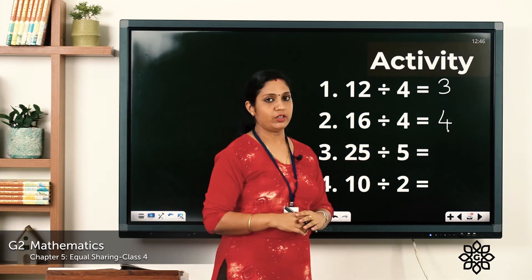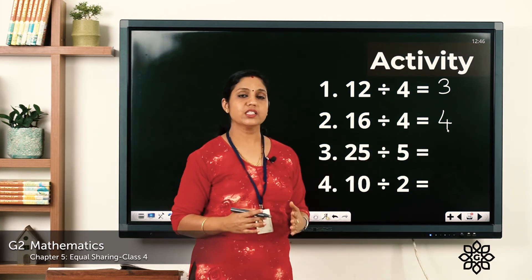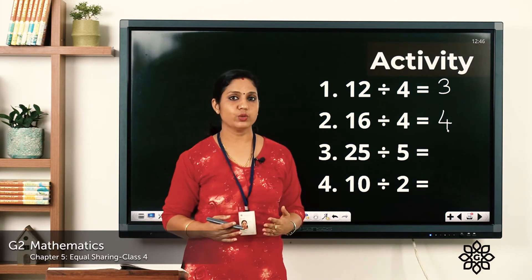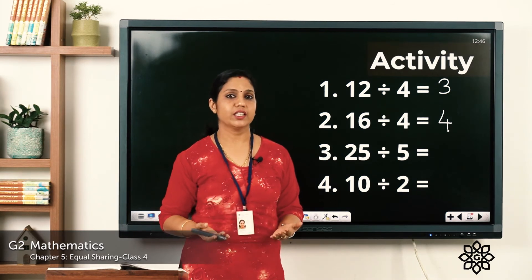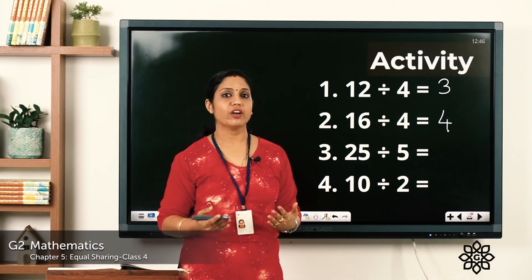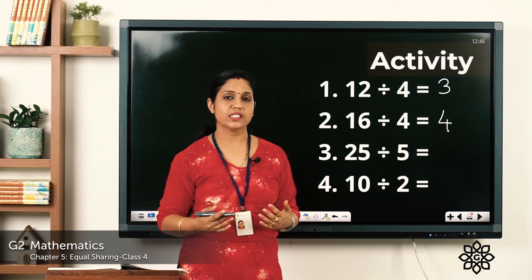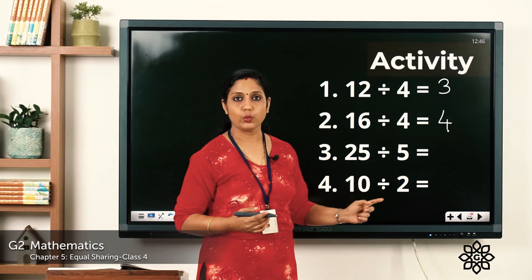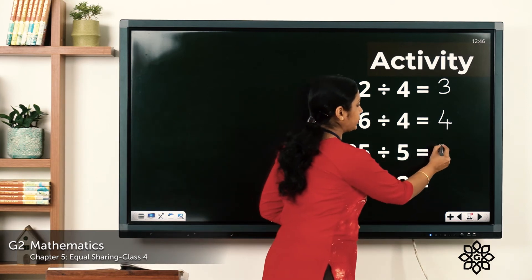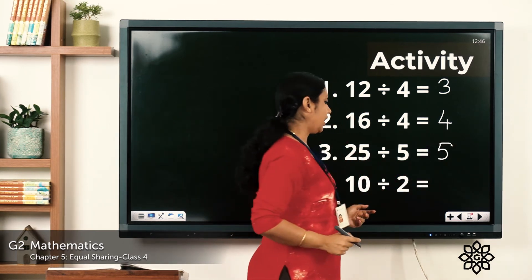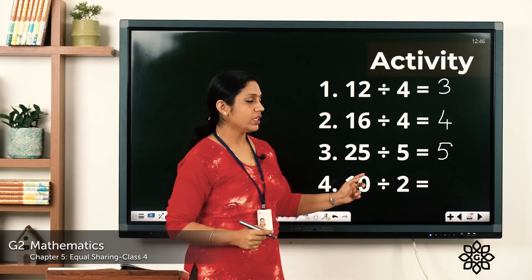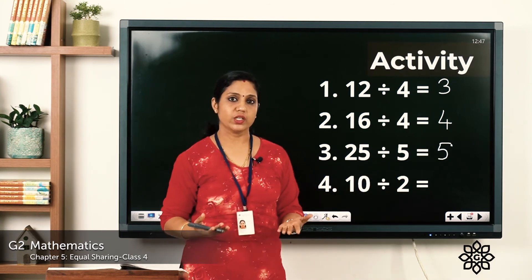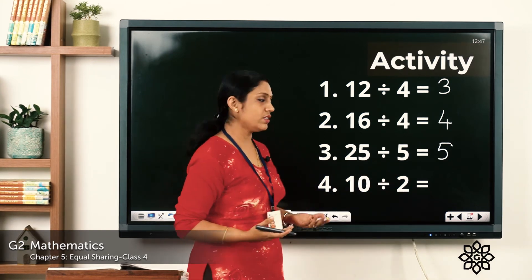Now, 25 divided by 5 — say the table of 5: 5 ones are 5, 5 twos are 10, 5 threes are 15, 5 fours are 20, 5 fives are 25 — so 25 divided by 5 is equal to 5. Last one: 10 divided by 2 — 2 fives are 10 — so the answer is 5.